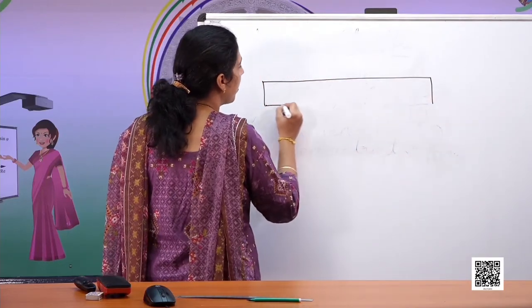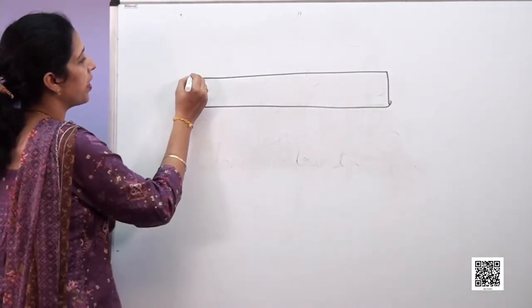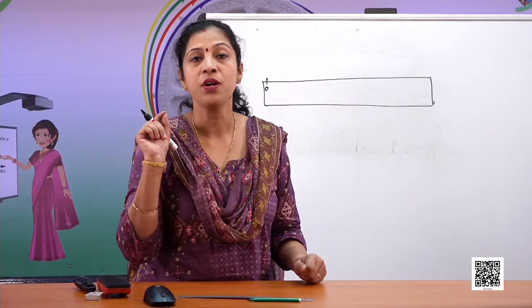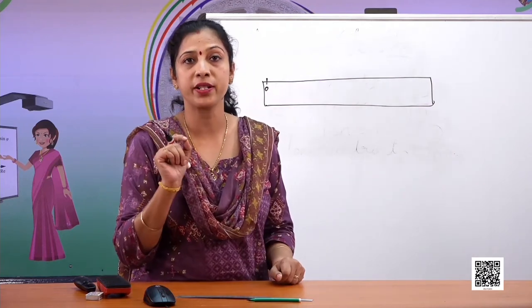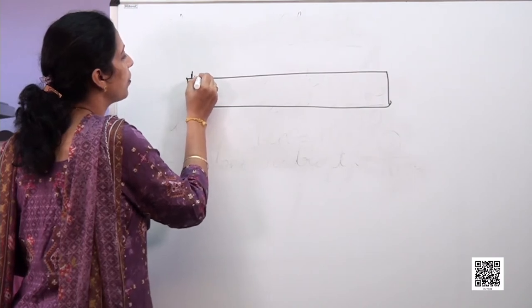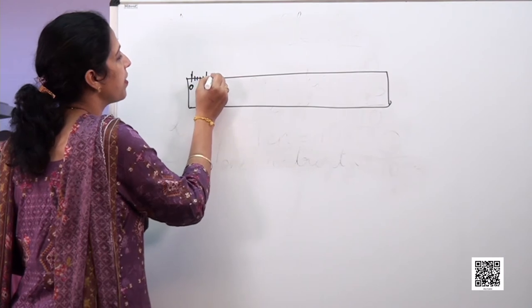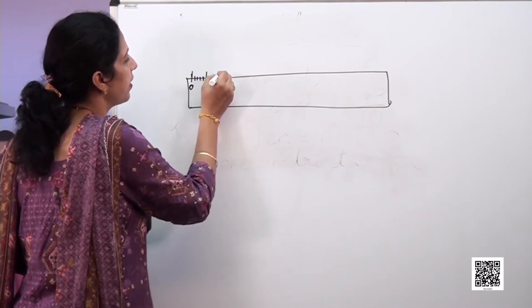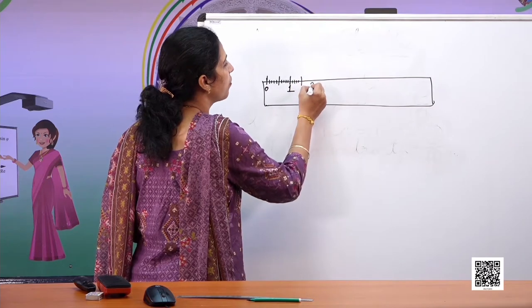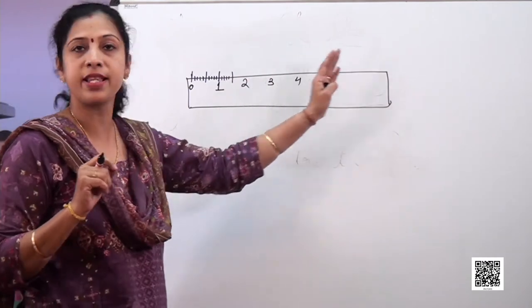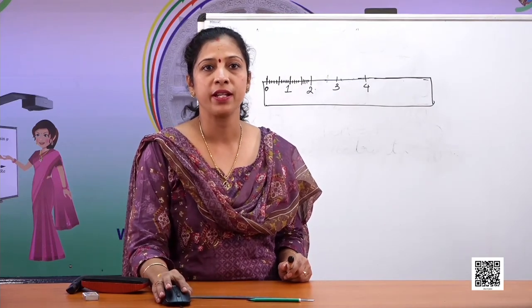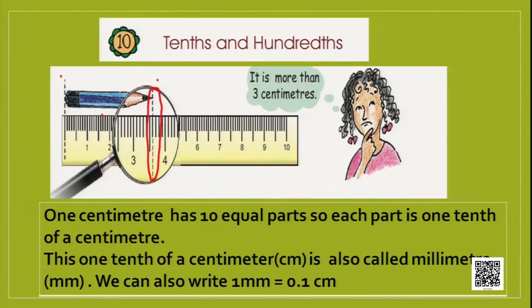Let me show you how a scale looks. This starts from zero marking — it is never written on the scale but it is very important so we do not make a mistake. After zero you can see small markings: one, two, three, four, then a bigger marking at five, then six, seven, eight, nine, then another big marking at ten. A smaller scale is 15 centimeters; a bigger scale is 30 centimeters.